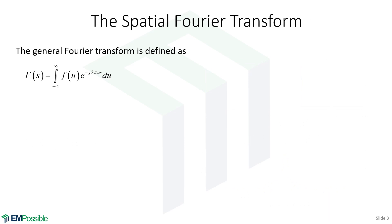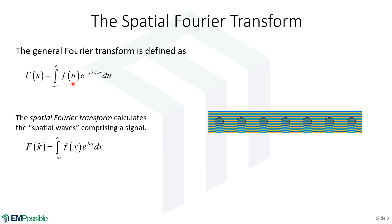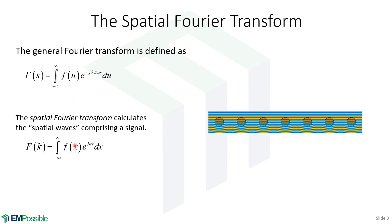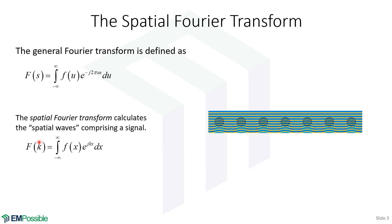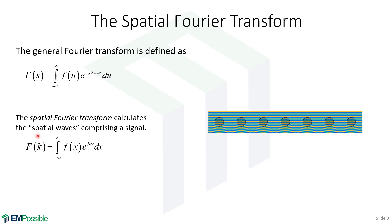Now, what will be called the spatial Fourier transform. So we start with the general Fourier transform. Now, let's interpret this variable U as position X, and let's interpret this S variable as K, sometimes called a momentum vector.